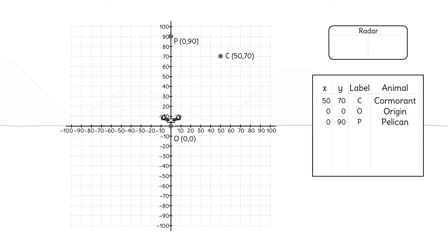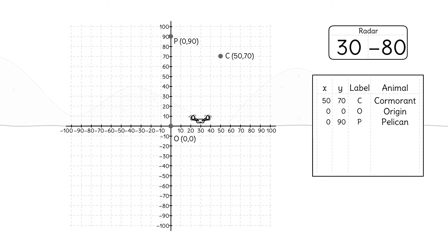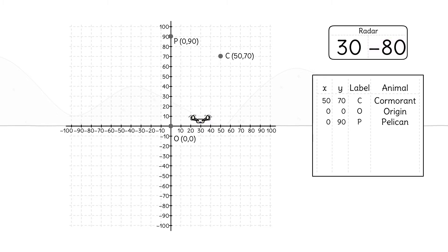Suddenly, Kamal's radar shows movement at the coordinates (30, -80). The drone quickly moves 30 meters horizontally and then pauses. Positive y-values mean we move up vertically, but what does negative 80 mean? We move down vertically.